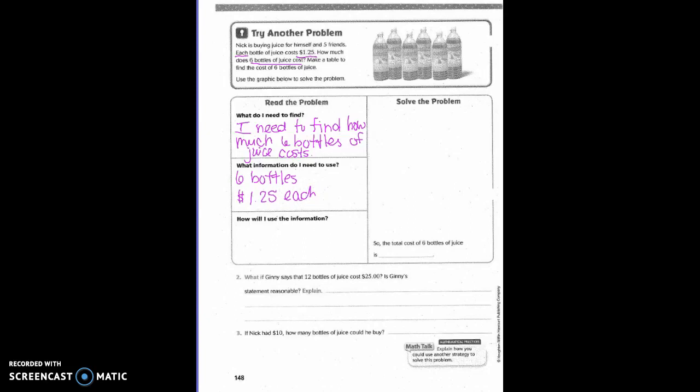How will I use the information? I will make a table to find the answer. So if I make my table over here, what's going to be on my left side? The number of bottles, right? And then what's going to go on the other side? The price.